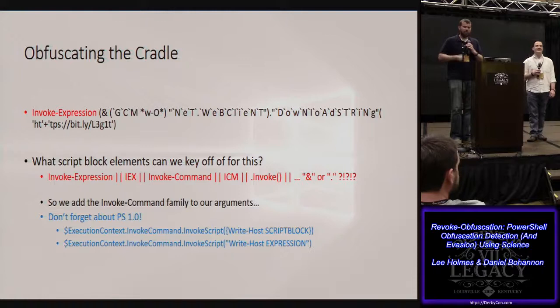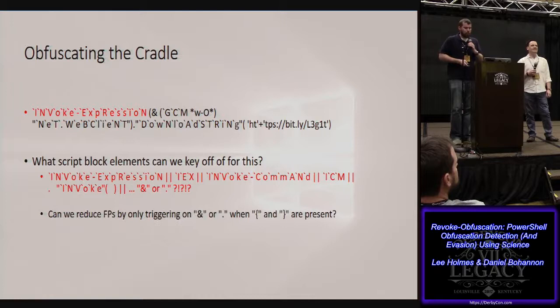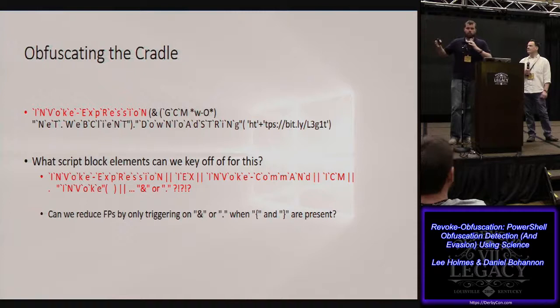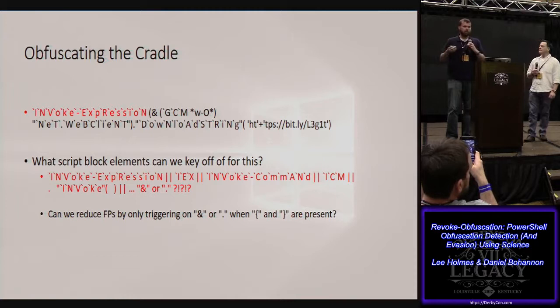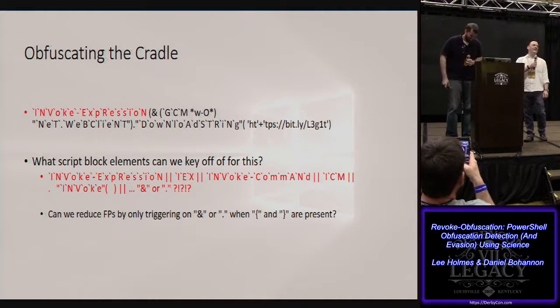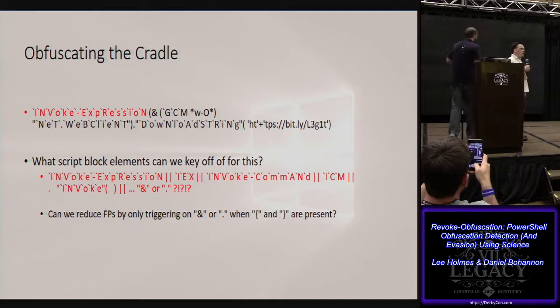There's also PowerShell 1.0 that can do the same thing with InvokeScript, which handles either an expression or a script block. That ExecutionContext automatic variable appears again — defenders should really be looking for it. As for the dot and ampersand invocation operators, we might key off them only when combined with curly braces, since script blocks must be denoted by curly braces — right?